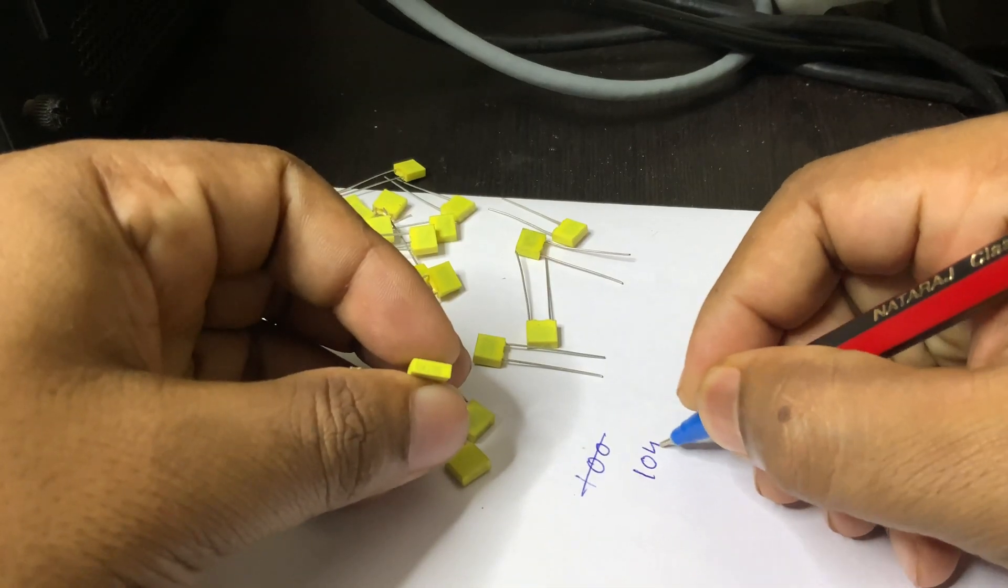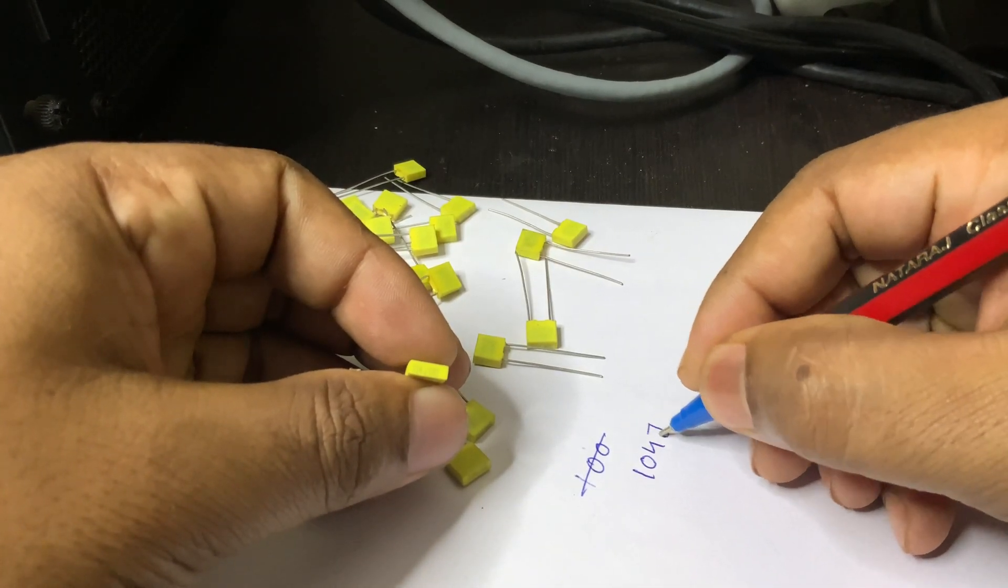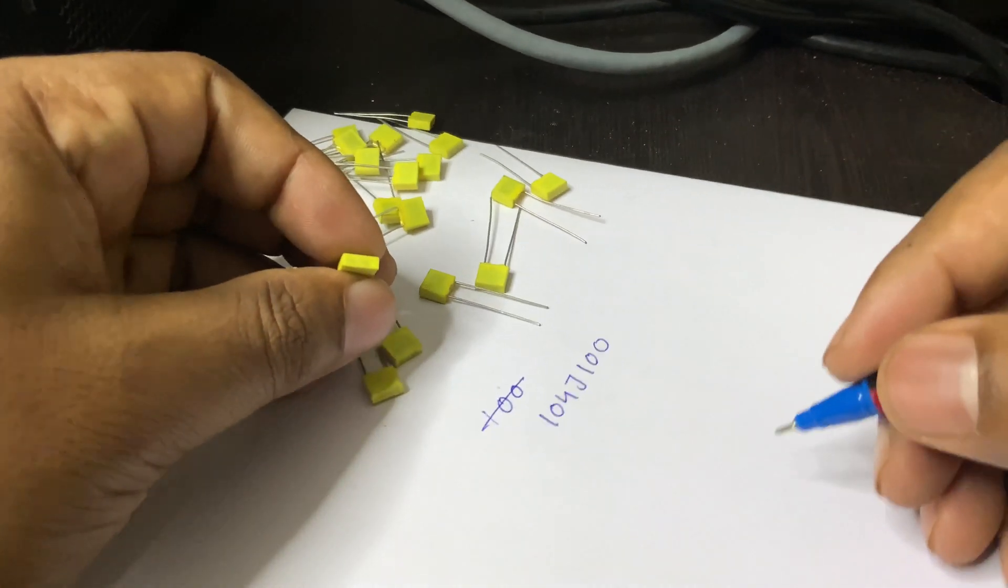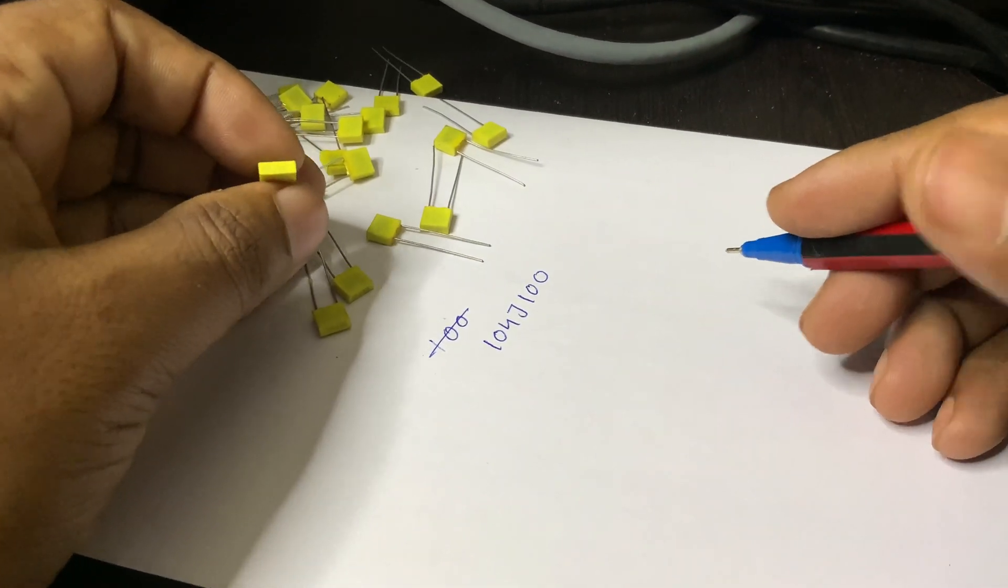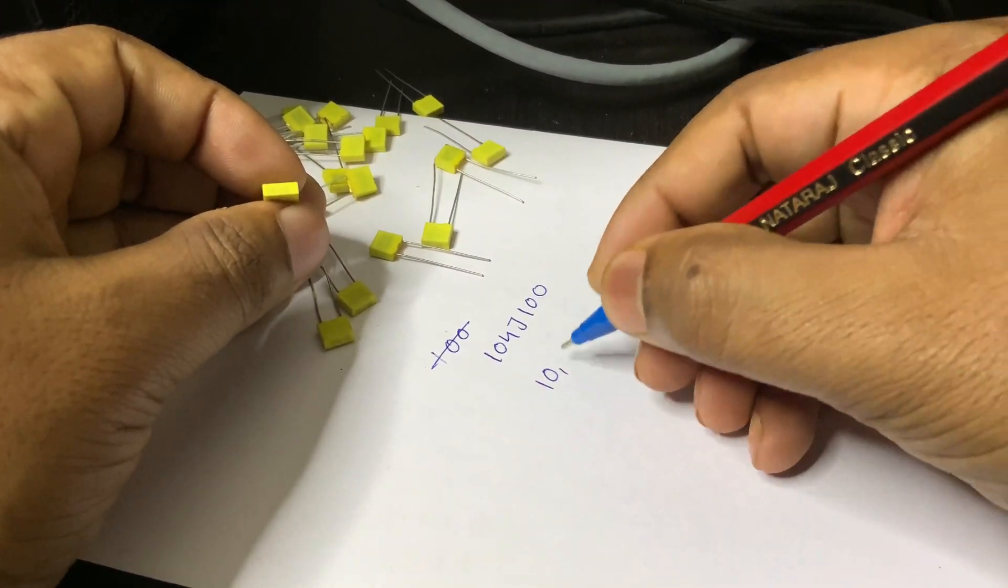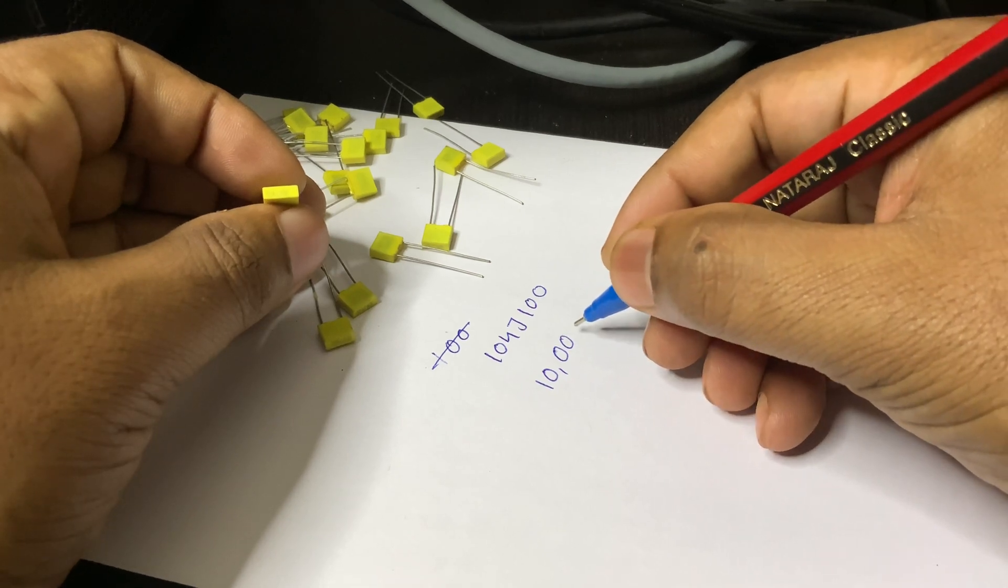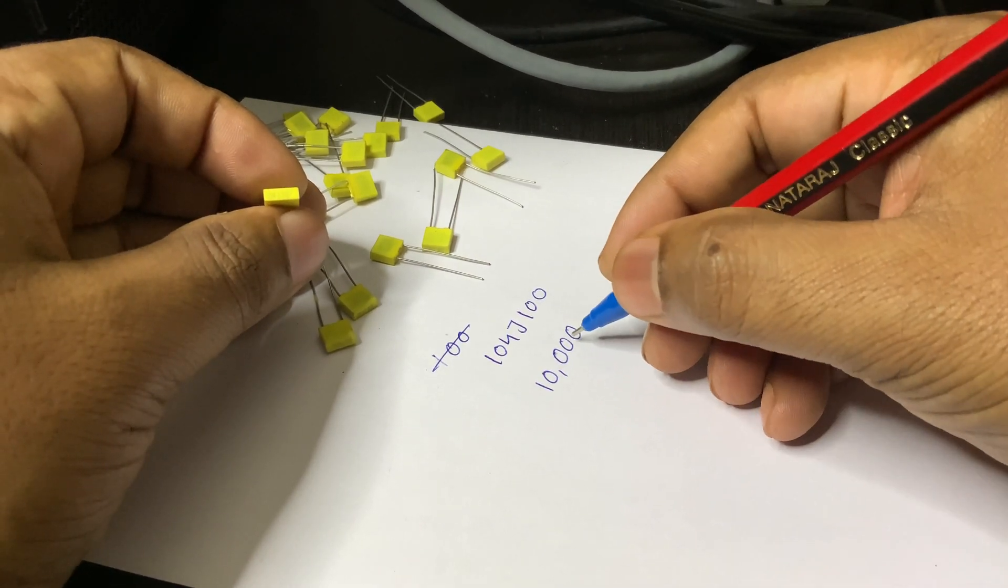The number 104 is a standard code that indicates the capacitance value. It breaks down as 10 followed by 4 zeros in picofarads, which equals 100,000 picofarads, or 100 nanofarads (nF), or 0.1 microfarads (µF).